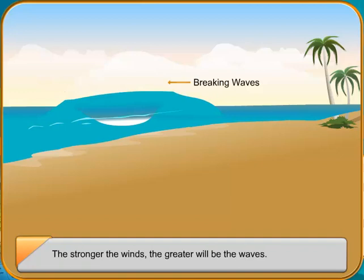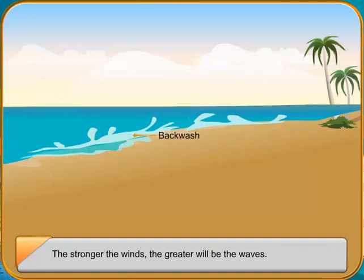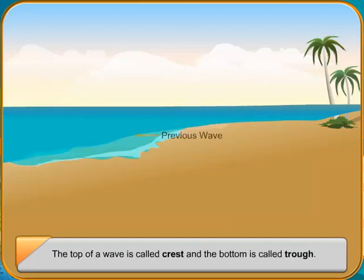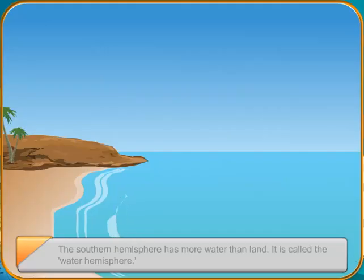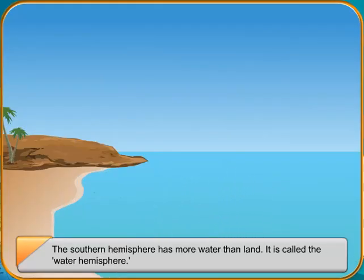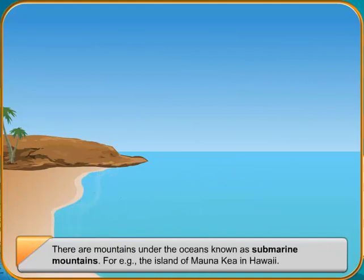The southern hemisphere has more water than land. It is called the water hemisphere. There are mountains under the oceans known as submarine mountains, for example, the island of Mauna Kea in Hawaii. Enormous tidal waves such as tsunamis can be very destructive.